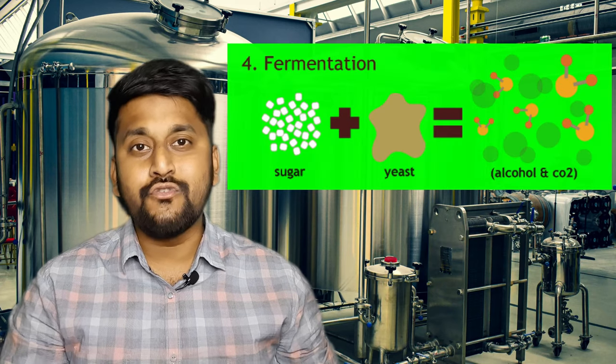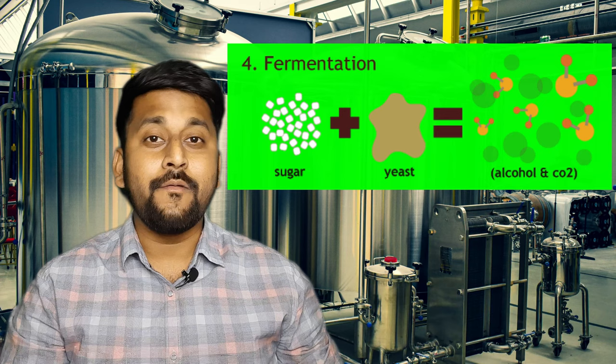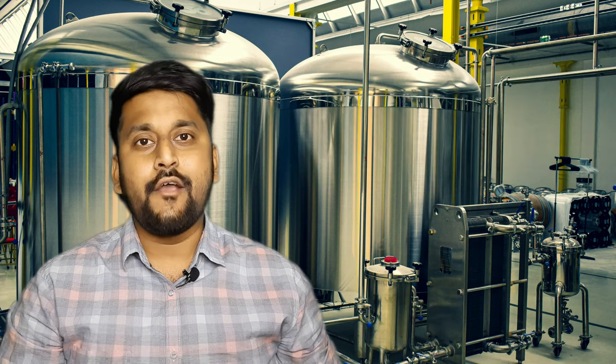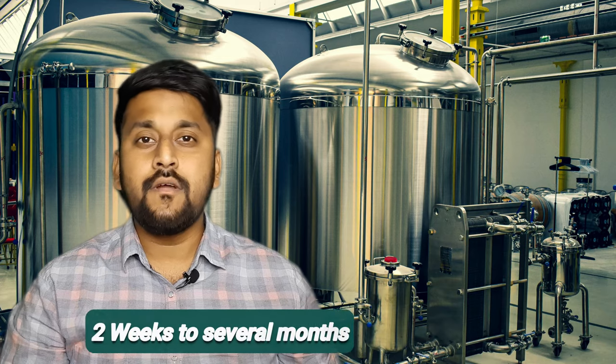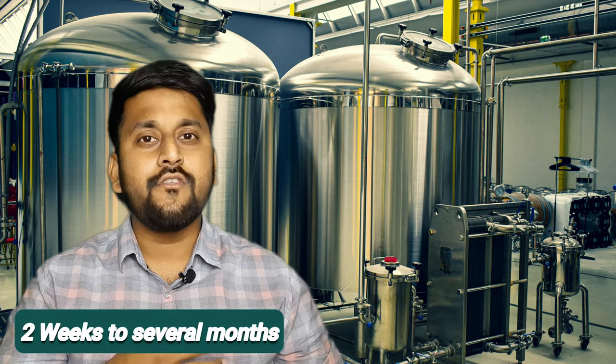In the fermentation tank, Saccharomyces cerevisiae, which is a yeast, is added. It breaks down the sugar — the carbohydrate present in the juice — into alcohol and carbon dioxide. The total fermentation process takes about two weeks to a month or even more.